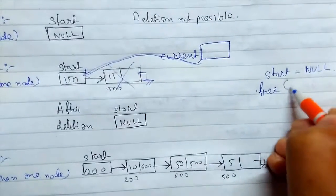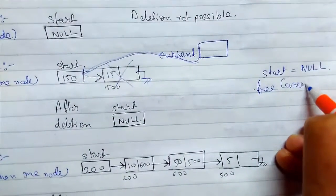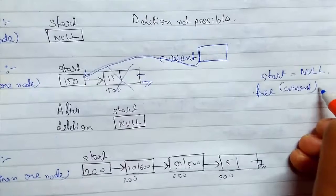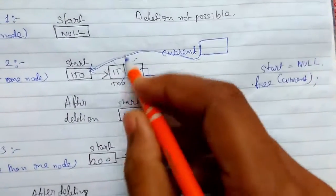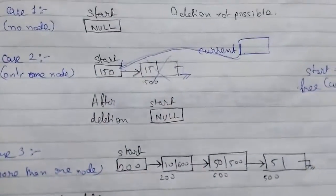First we will set start to null then we will free current. So that's how it works.